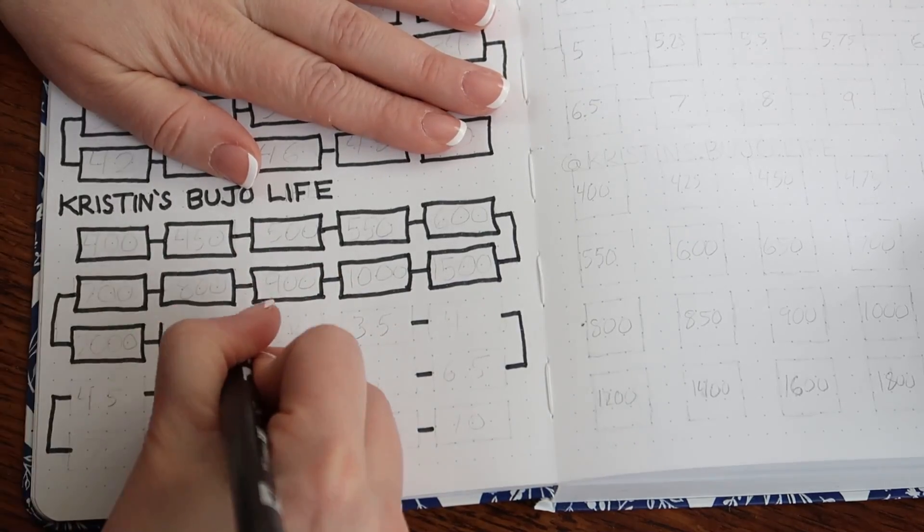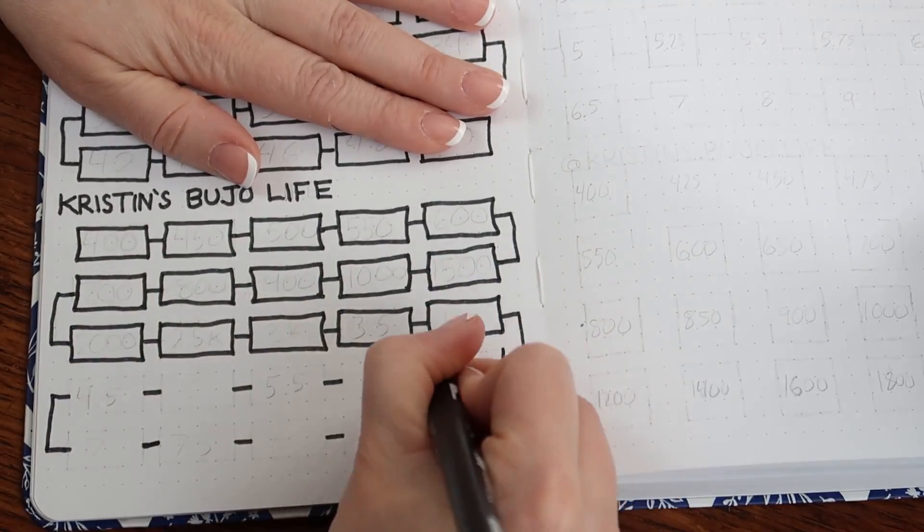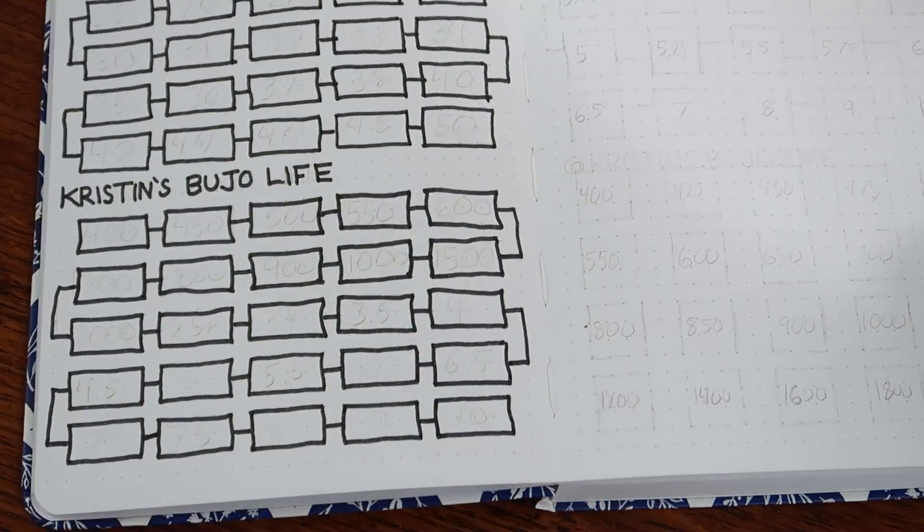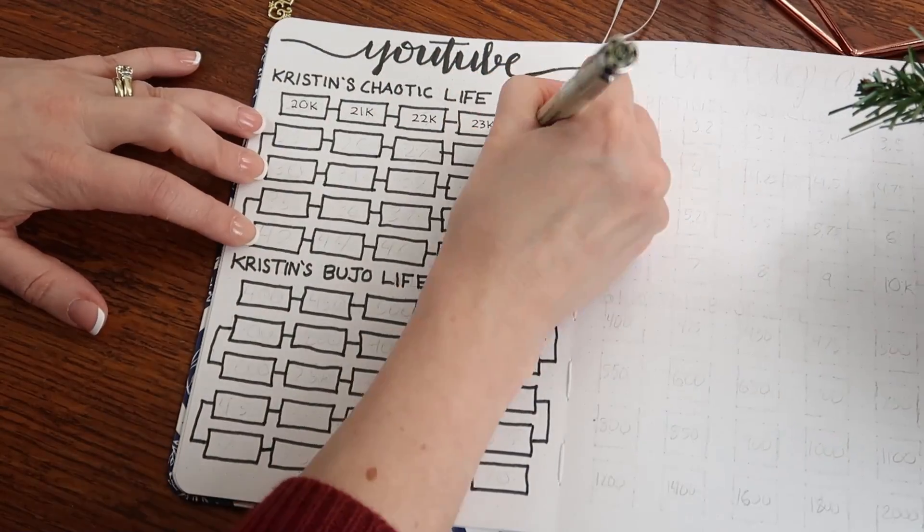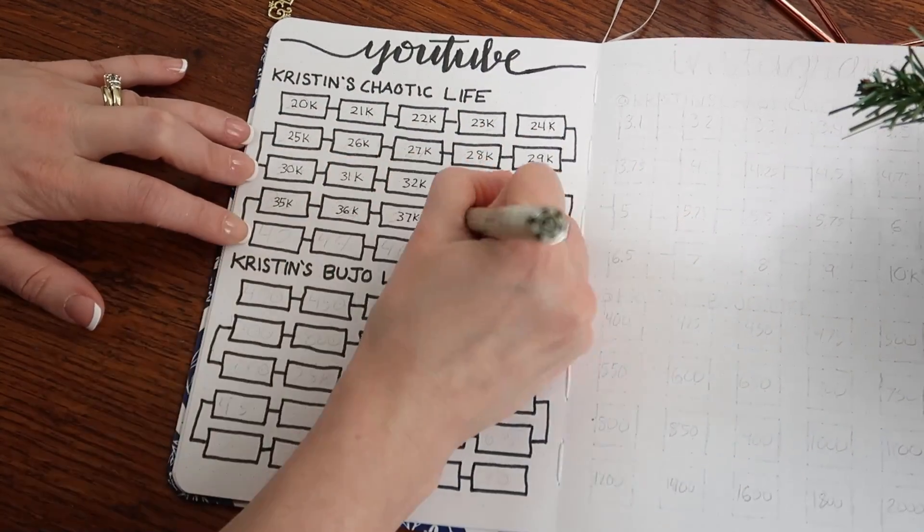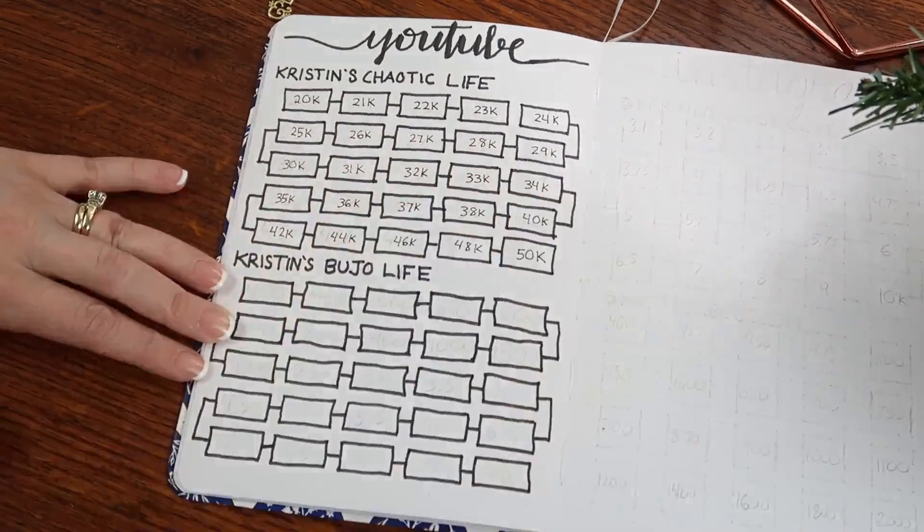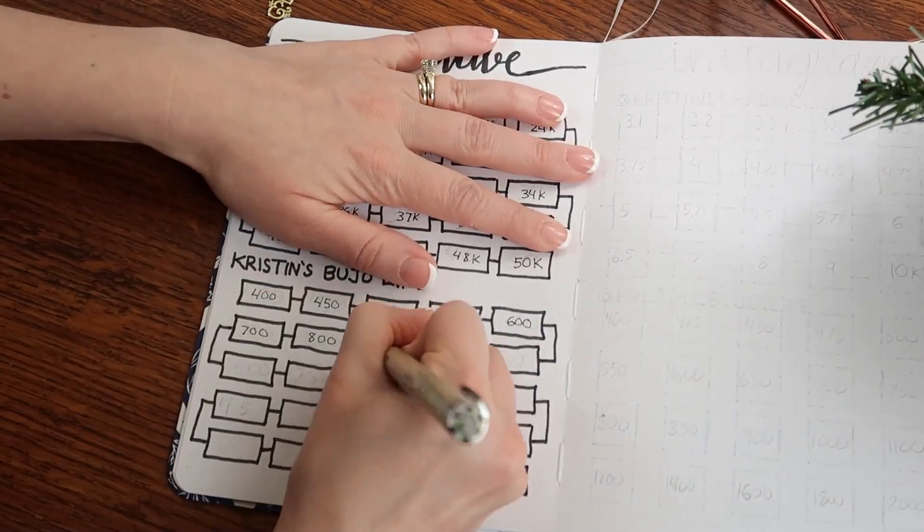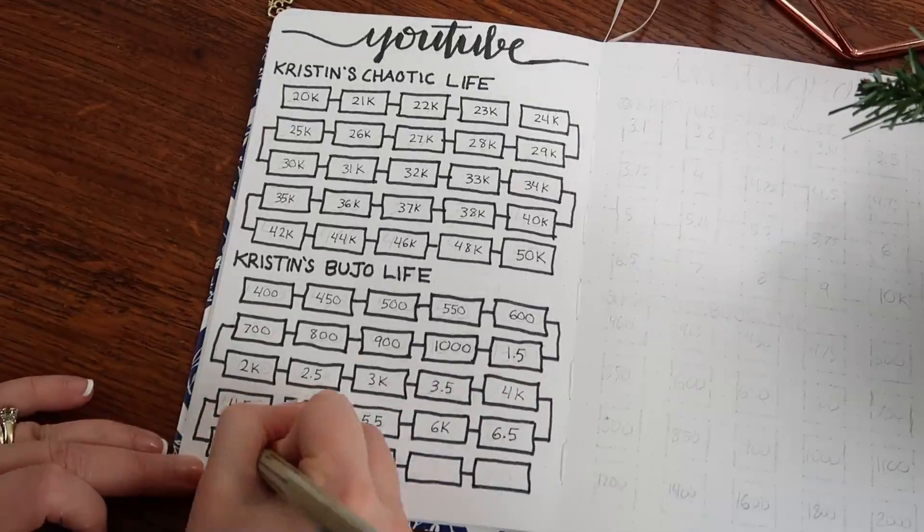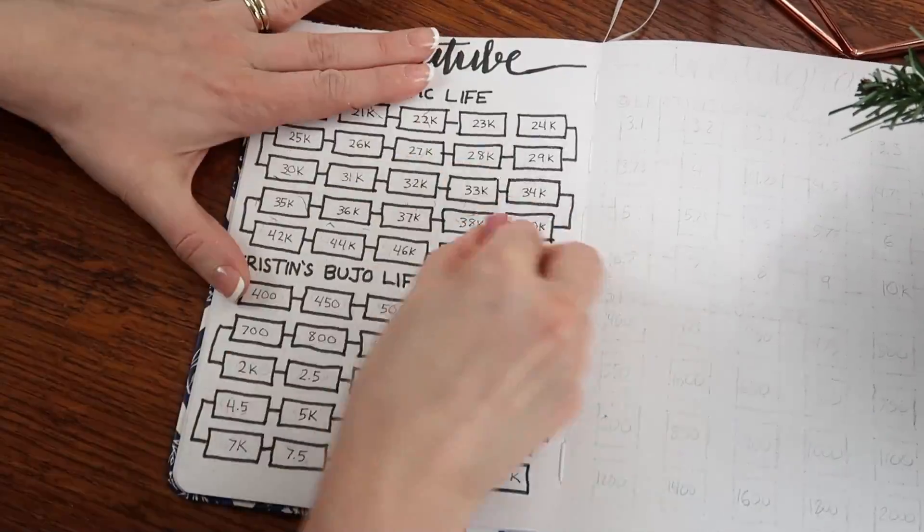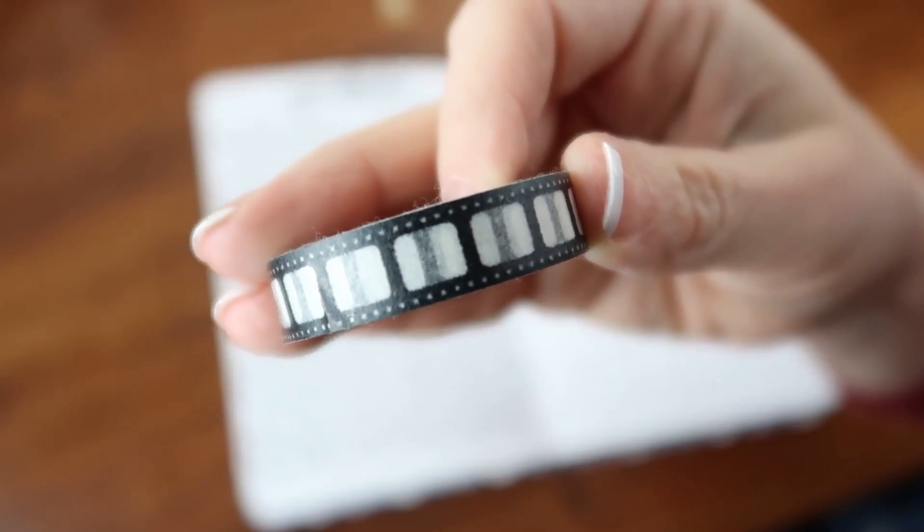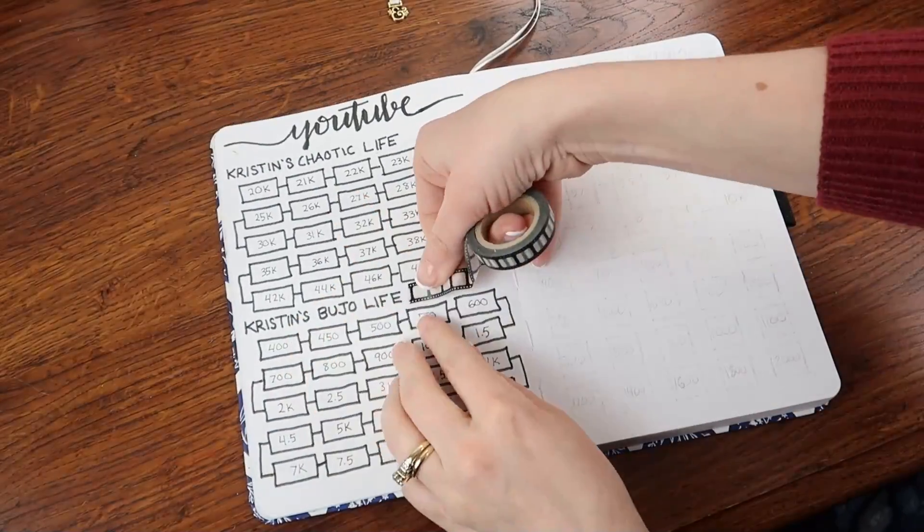Now, I gotta say, I went big for my goals because those are just the milestones that I really want to hit. And whether I hit them this year or not, I still wrote them on there because, I mean, you never know, right? So for my Kristen's Chaotic Life, my main channel, I put 50k subscribers. I am almost at 20,000 subscribers there, so it's doable possibly. For this channel here, I put 10k, which I know is going to take me quite a while, so we will see how long it takes me to get there.